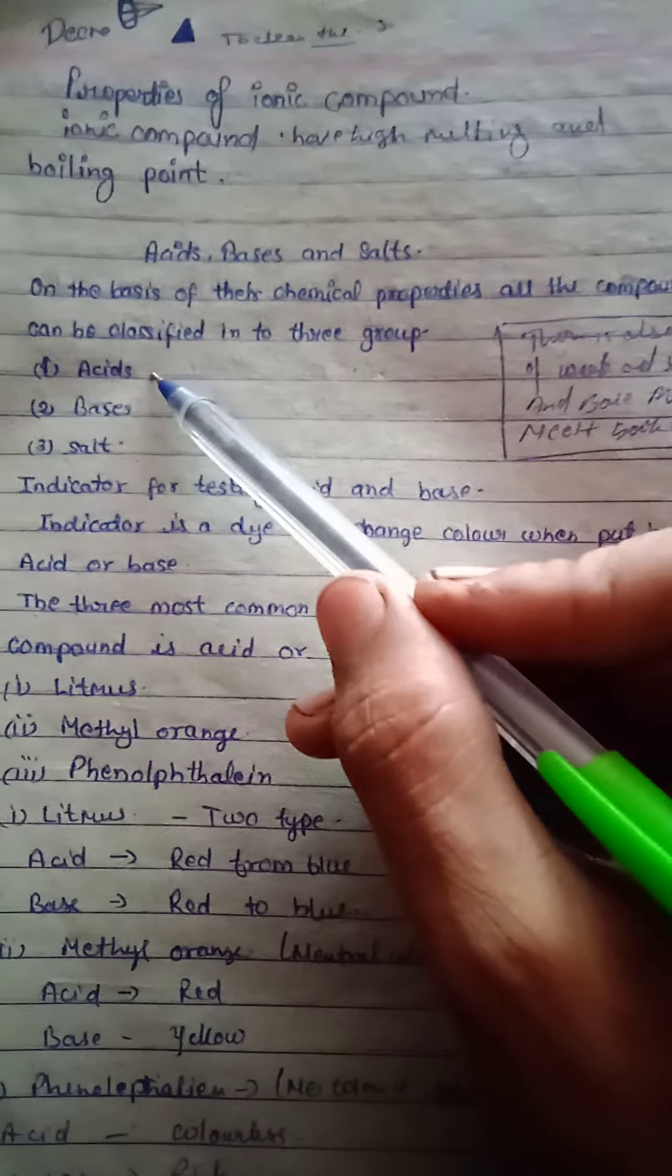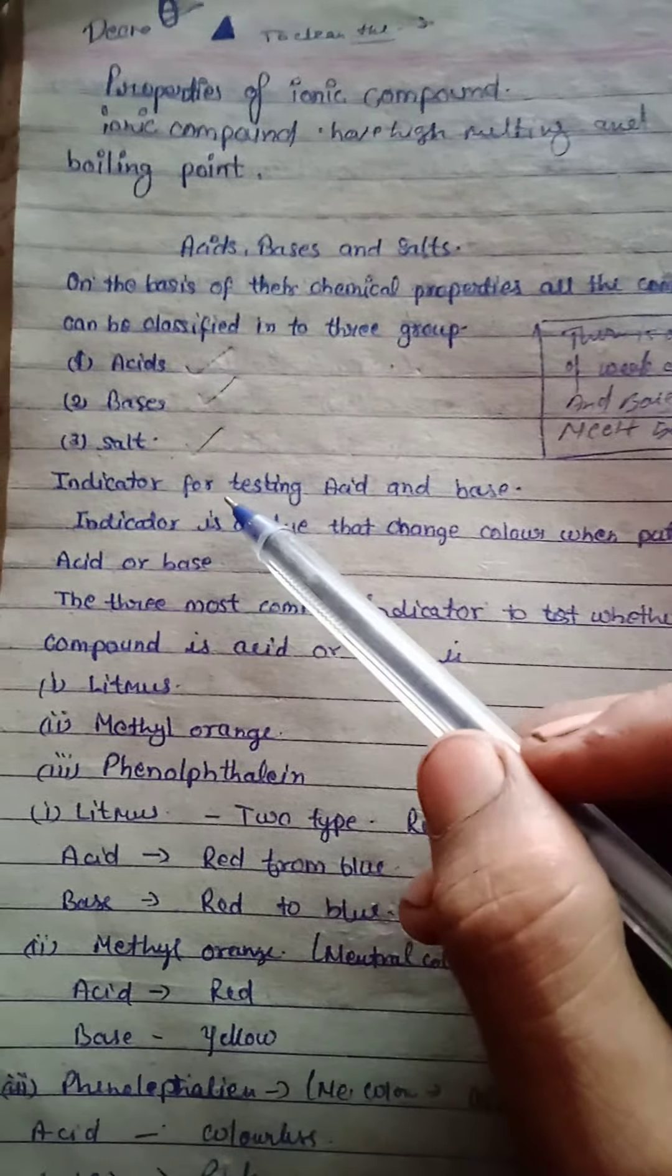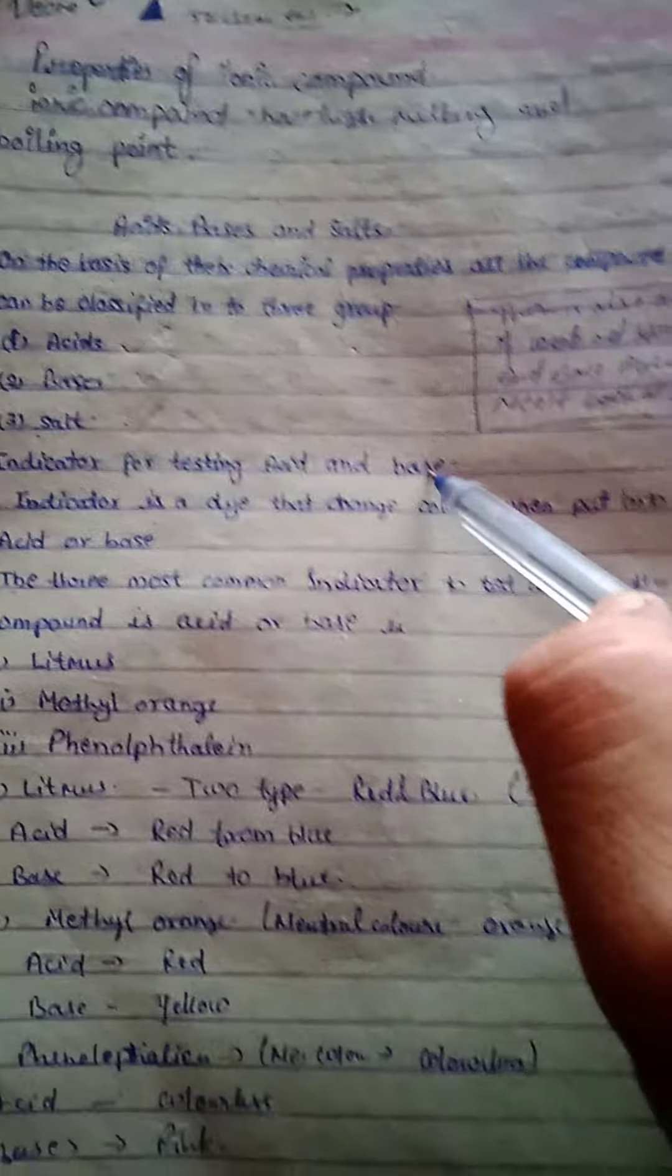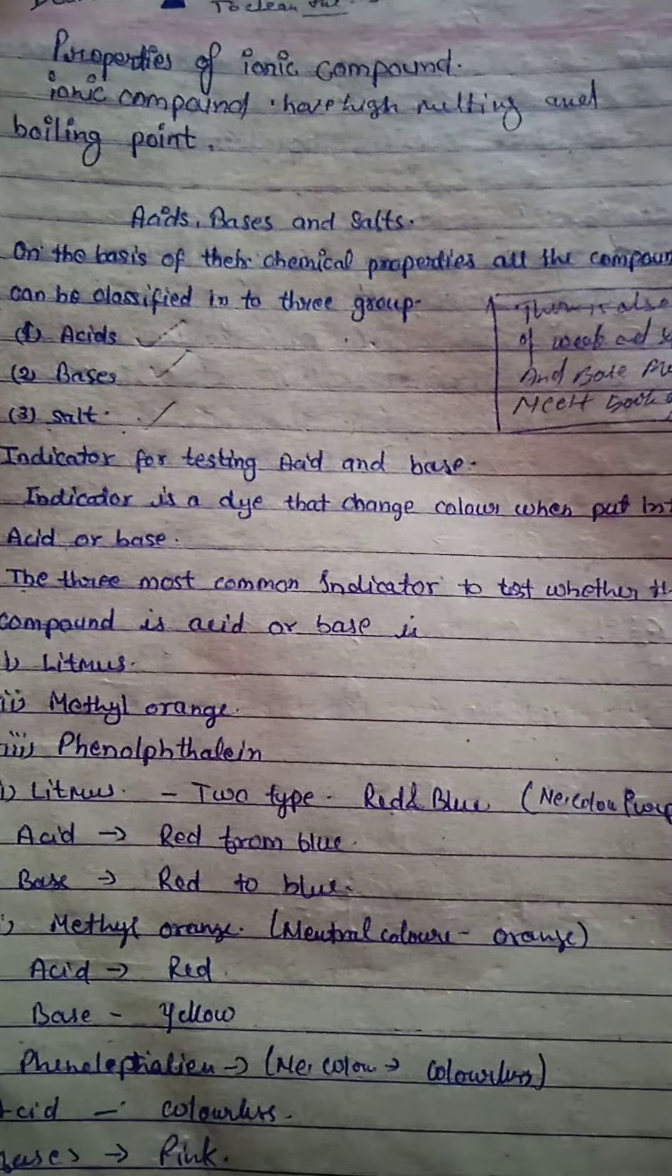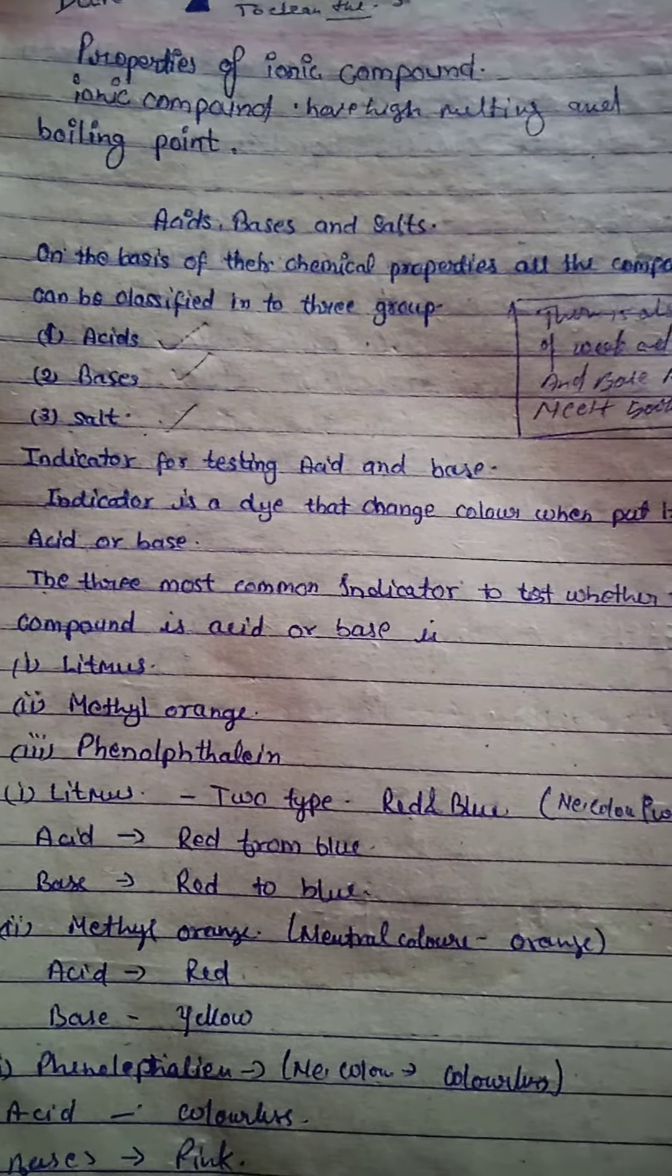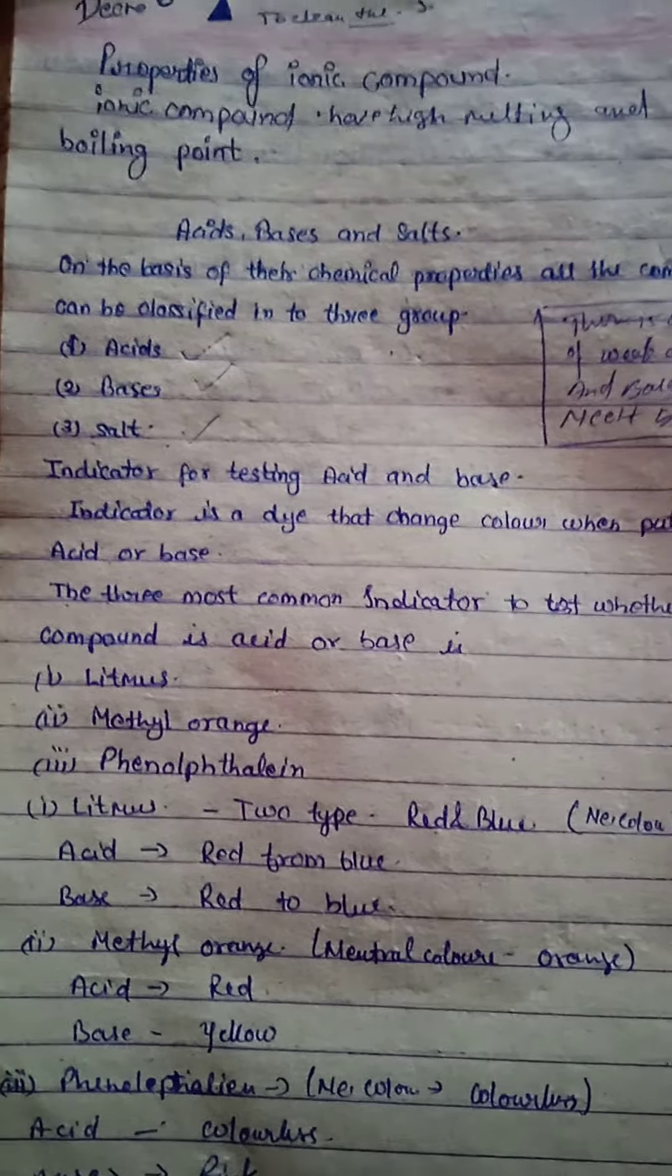Indicators for testing acid and base. We need a certain solution or a thing to test whether the compound is acid, base, or salt. This is very necessary to know whether the compound is acid, base, or salt.